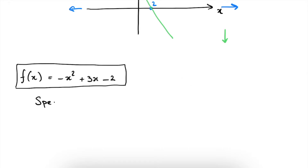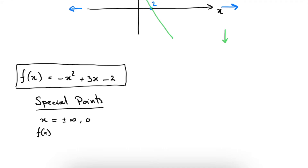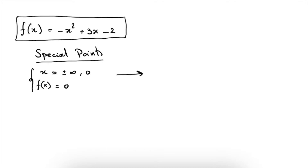The first step in function analysis of any function is to find the special points. For polynomials, the special points for x will always be plus and minus infinity and x is equal to zero. And for the value f of x, this will always be f of x is equal to zero, because at this point the function crosses the x-axis and the sign of the function will switch from positive to negative or from negative to positive.